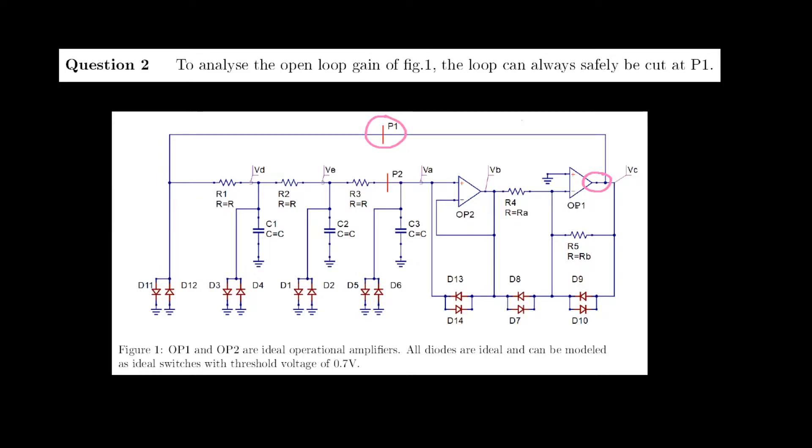And this output indeed has an impedance of 0 ohms, so we are completely allowed to cut the loop at p1. The statement above is true.